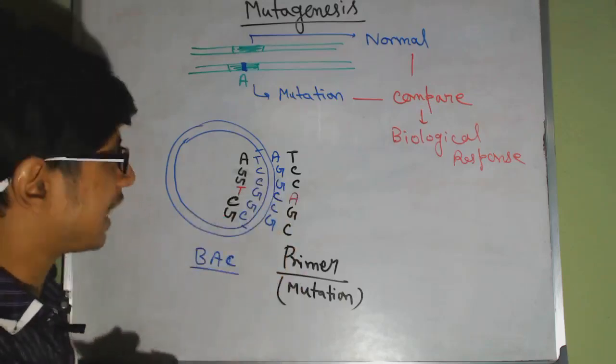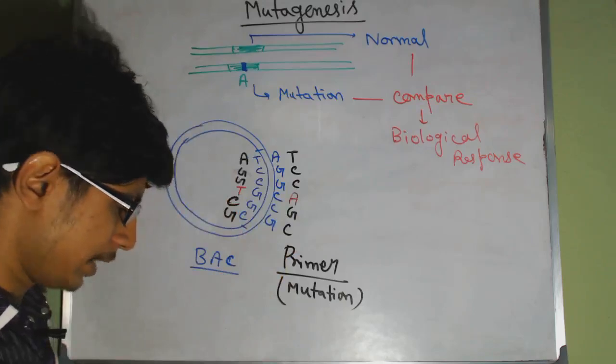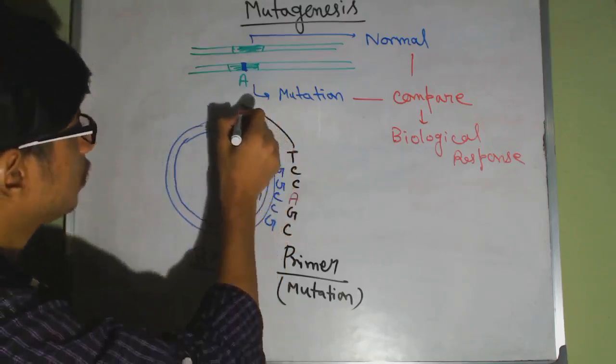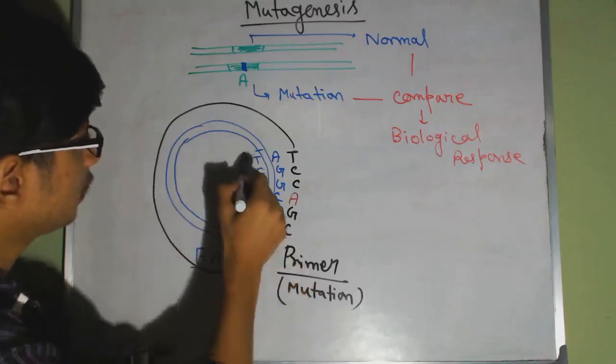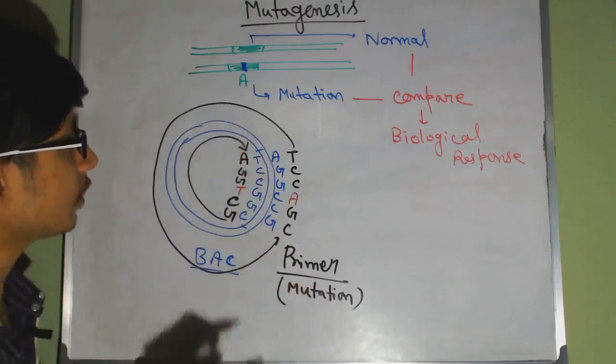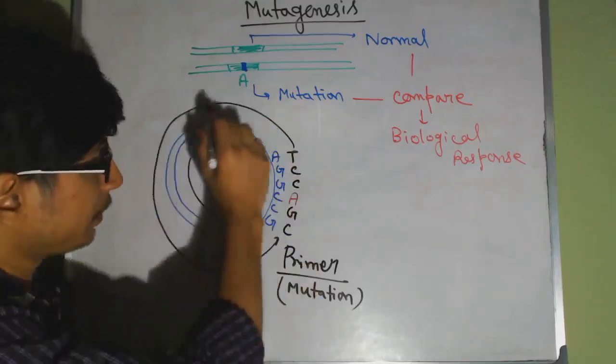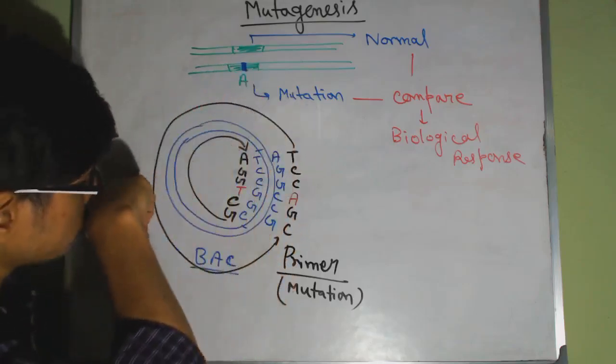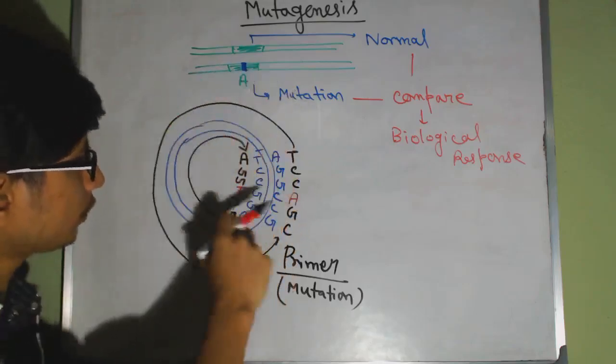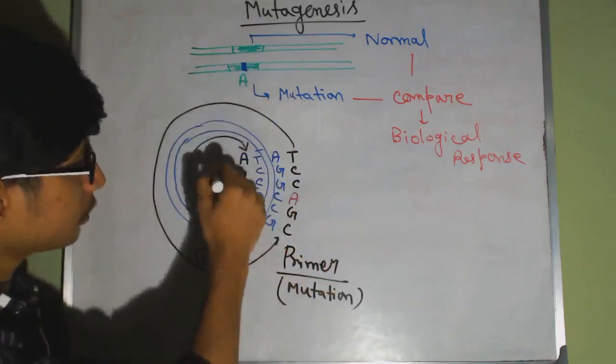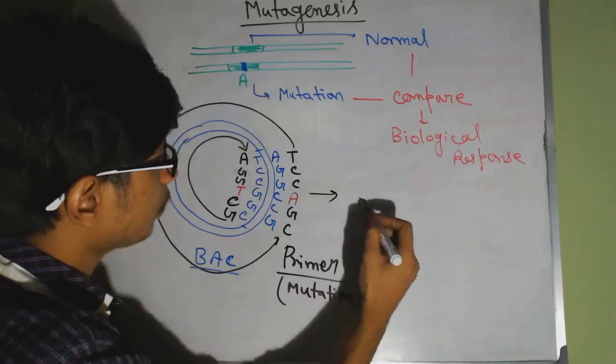Now once we have that primer in our hand, then we use that primer to complete the process of DNA replication, because we elongate this primer, we elongate this primer, in the forward direction, I mean 5 prime to 3 prime direction here, and similarly to that primer. So after doing this, what we will get,